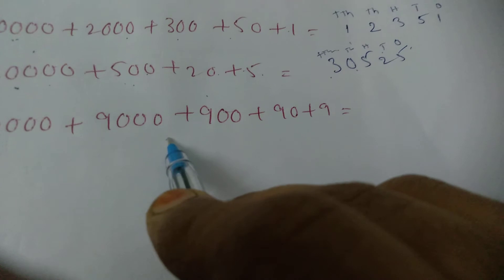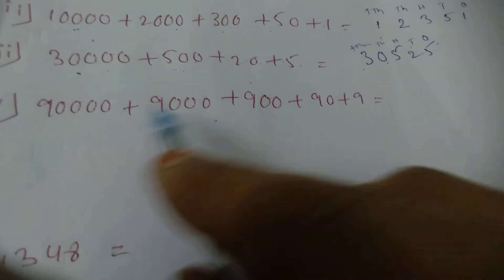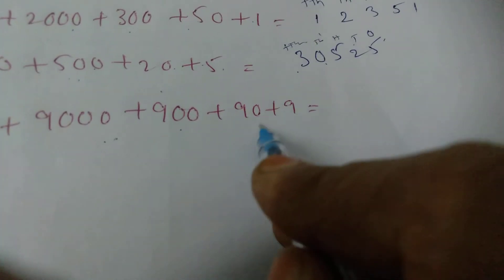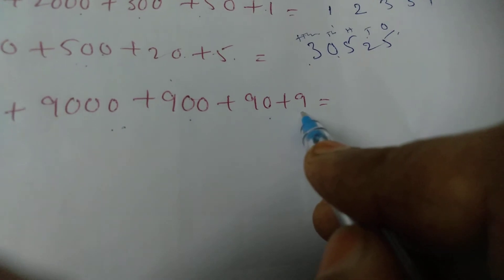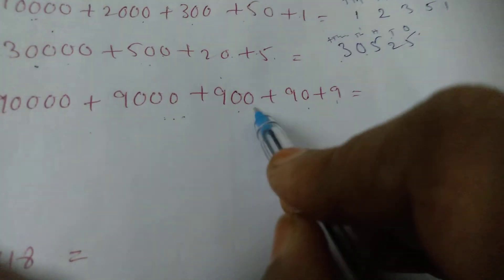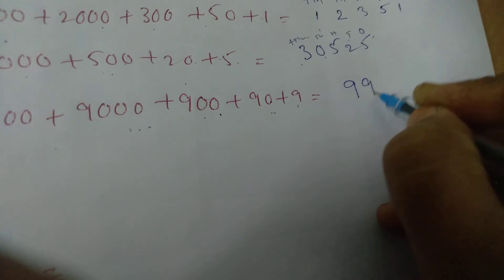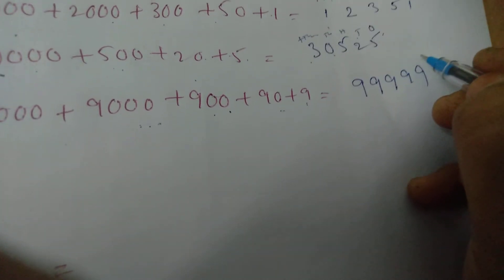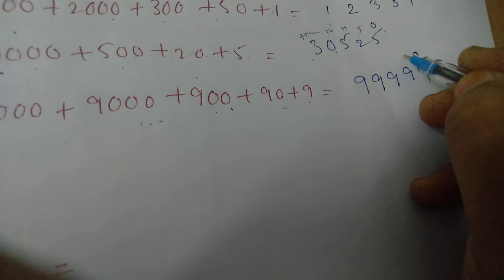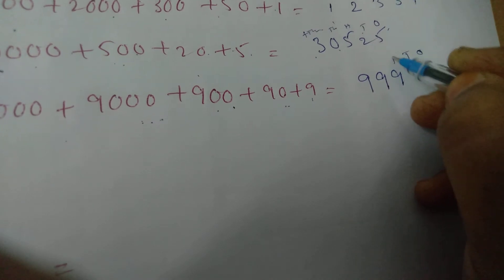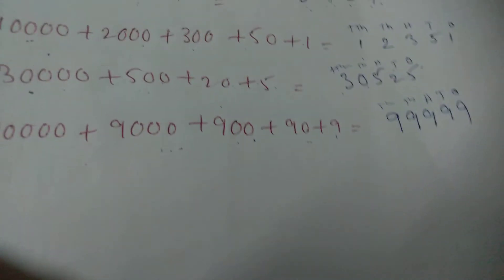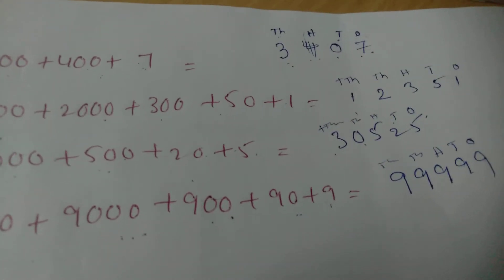Next: 90,000 plus 9,000 will be 99,000. And here is 900 plus 90 plus 9. So it will be 99,999. Set up the place values: 1, 10, 100, 1000, 10,000 — and write accordingly.